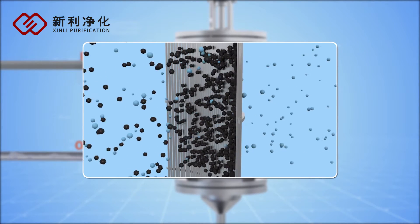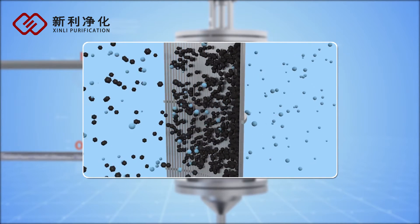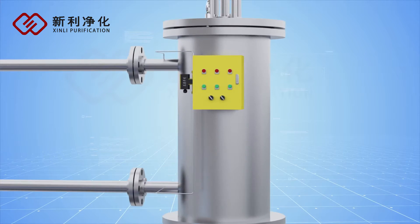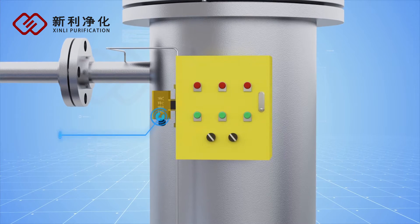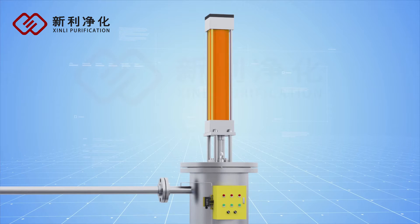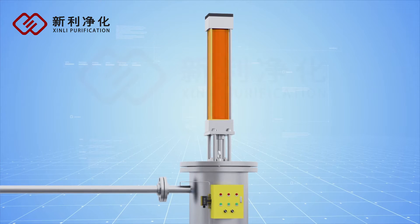The impurities increase gradually after some time. When the differential pressure reaches the set point, or time reaches the set point, the electric controller sends out a self-cleaning signal.